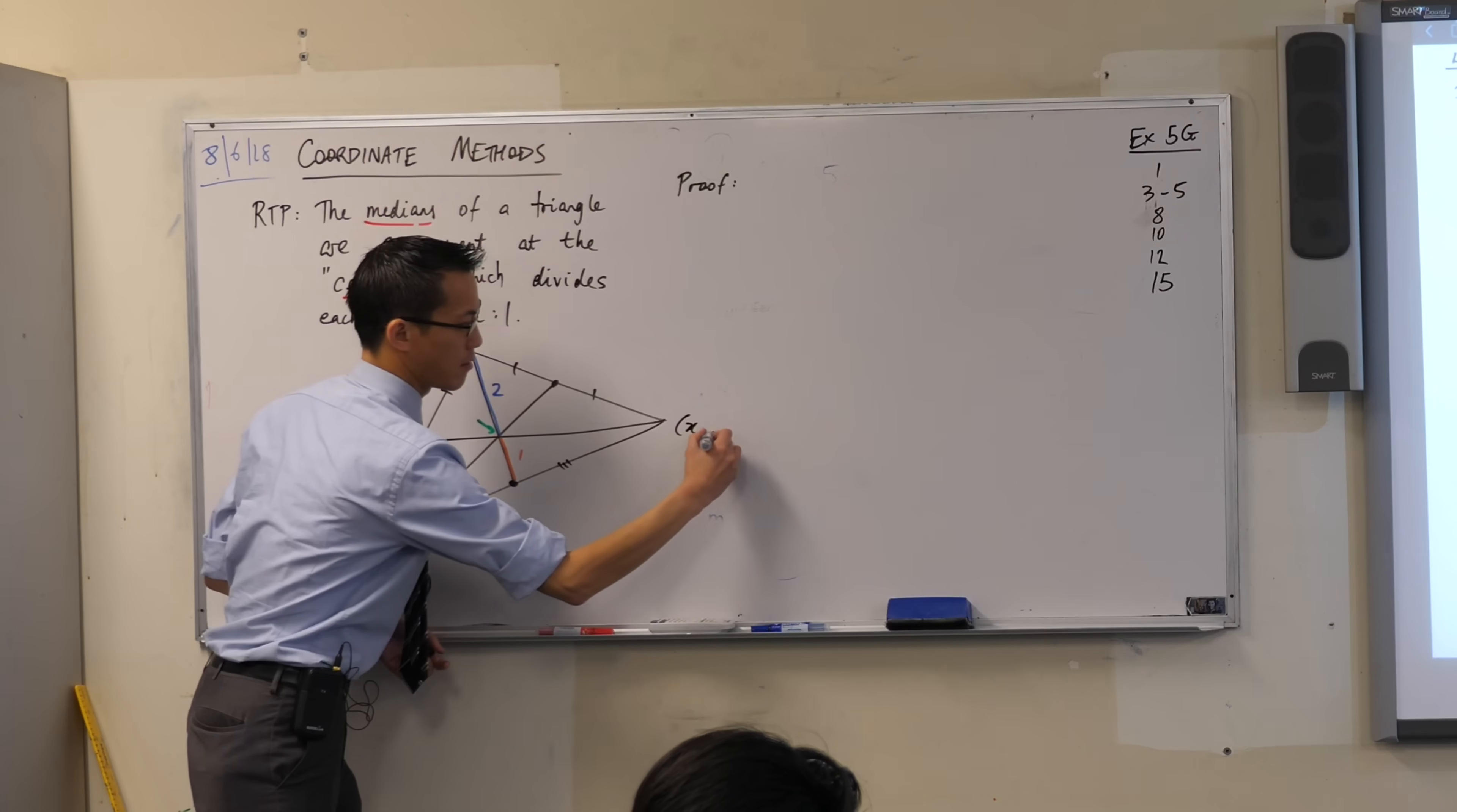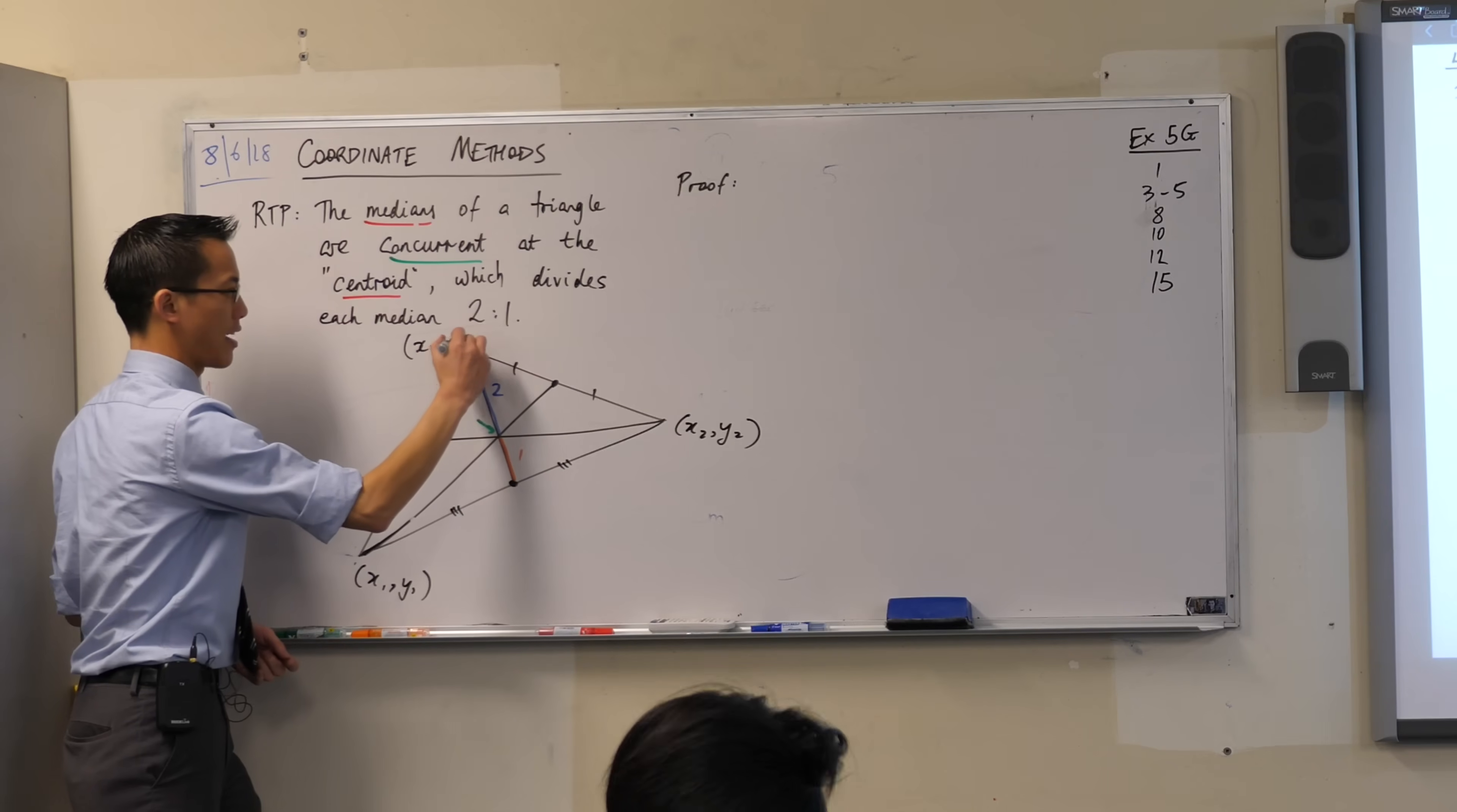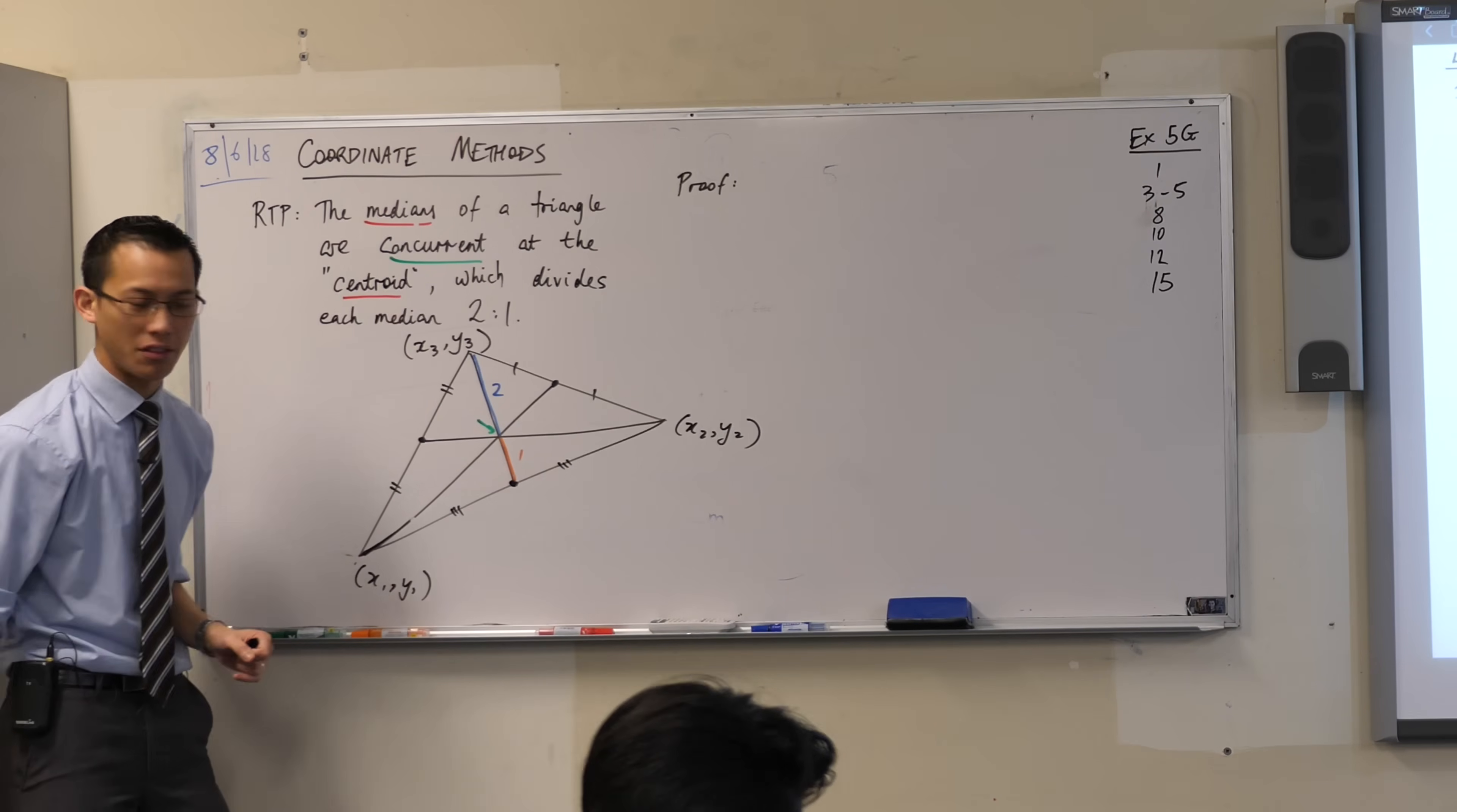This could be a random point, so I'm going to call it x2, y2, and then, I guess, I'll be original and call this x3, y3. Is that alright? So I've put coordinate geometry structure on this, okay?